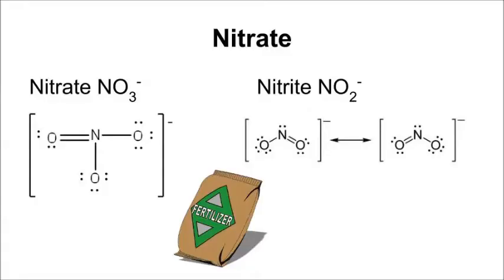Here is nitrate, NO3 with a minus 1 charge — a group of four atoms that is covalently bonded. And you know why, with that charge of minus 1, it's a polyatomic ion.